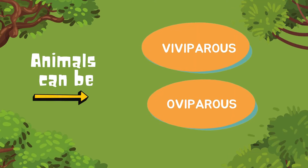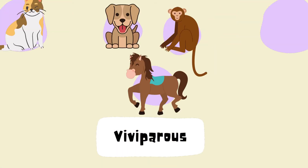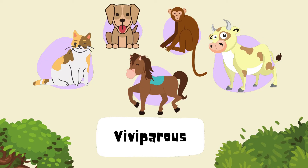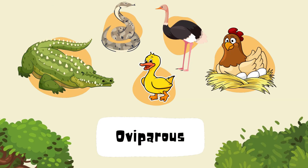Animals can be viviparous or oviparous. Viviparous are animals that are born alive by their parents, such as cats, dogs, horses, monkeys, and cows. Oviparous are animals that are hatched from egg, such as crocodiles, snakes, duck, ostrich, and chickens.